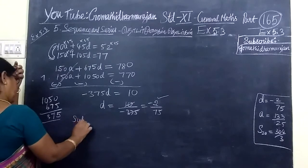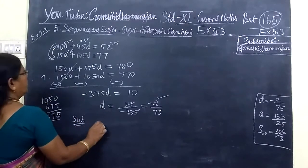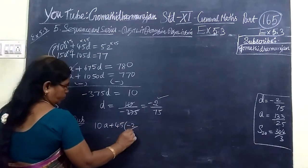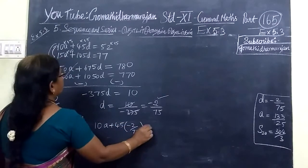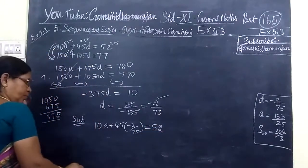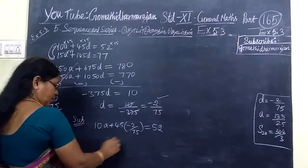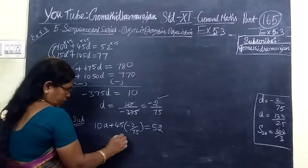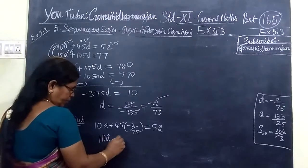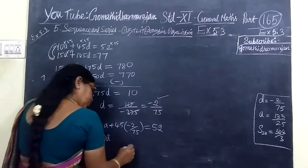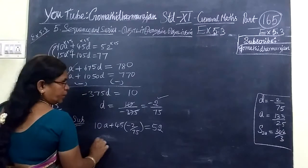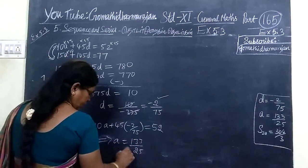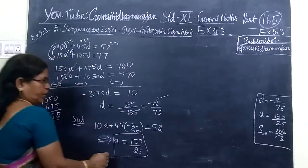D you substitute in any one equation. So, 10A plus 45D. D value you can write minus 2 by 75. That is equal to 52. Now, here we are writing 10A. Now, this implies A equals 133 by 25.